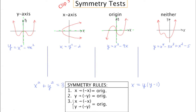In the upper left, we have an example of a function that has y-axis symmetry. What that means is that if I were to fold the graph over the y-axis, the left-hand side and the right-hand side would line up. In example two, we have a graph that exhibits x-axis symmetry, meaning if I were to fold over the x-axis, the top portion and the bottom portion would line up.